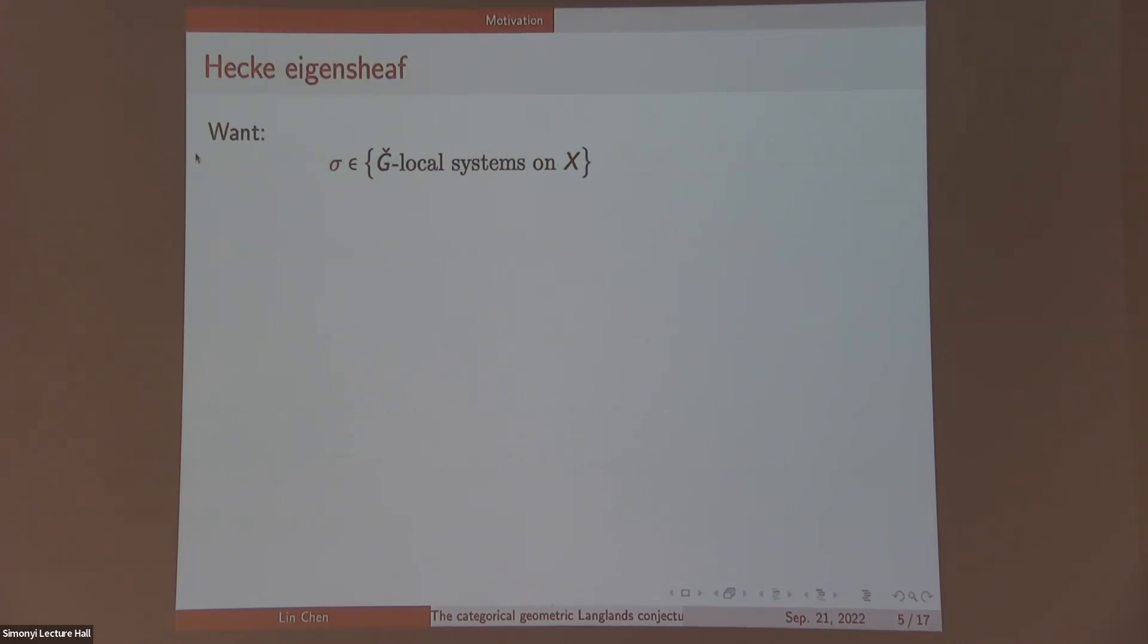Okay, now let's translate our goals. We've given a sigma, which is now a G-check local system on X. We want to produce a sheaf F-sigma on Bun_G, which of course should satisfy some condition. A lot of them is the Hecke property, which I will tell you now.